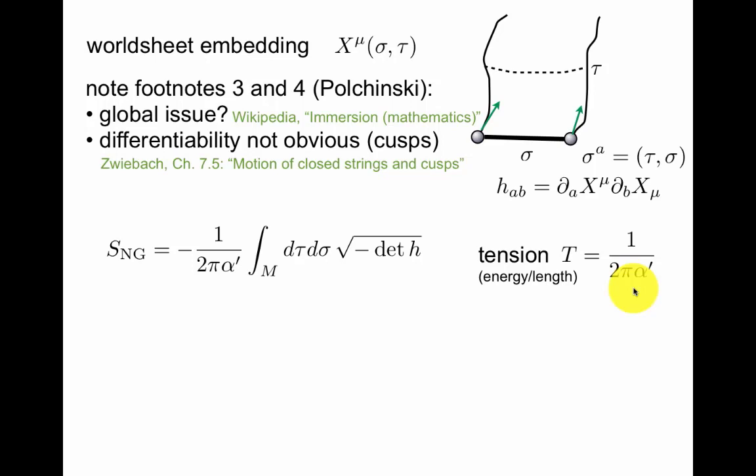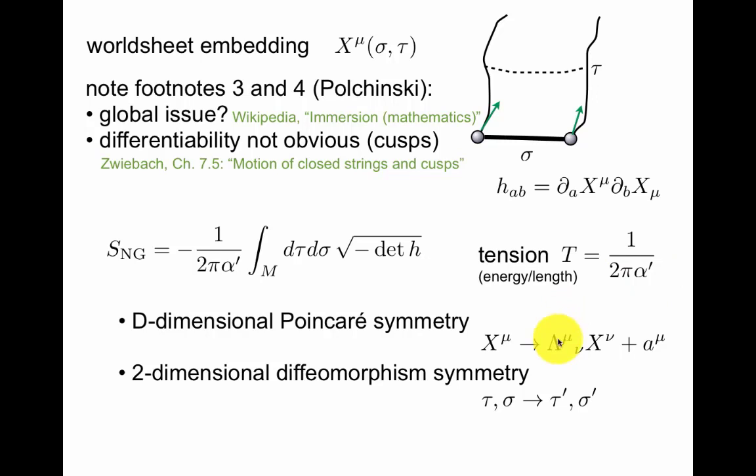We have a funny factor up front, which is minus the tension, and alpha prime here is known as the slope for historical reasons, but it has units of area. So this whole thing is dimensionless, because we set h-bar to 1, so we want the action to be dimensionless. And then the tension should be units of 1 over length squared, which is energy by length, if you think about it. So this action has d-dimensional Poincaré symmetry, the usual Lorentz transformation plus a possible shift. It's obvious, because the indices are contracted here. So right now we imagine that this moves in a flat background, but we will later generalize this to a curved background, as I was hinting at in the previous slide.